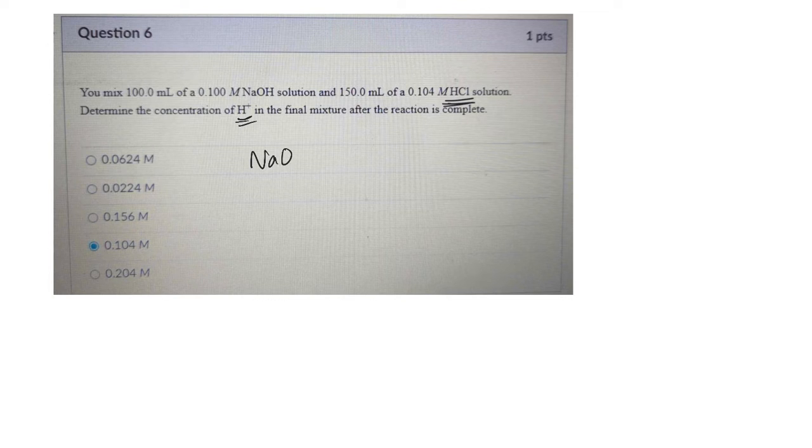If I write the chemical equation out, NaOH + HCl → NaCl + H2O, it would be this plus water. And everything's balanced, so it's all 1 to 1 to 1 to 1.